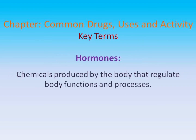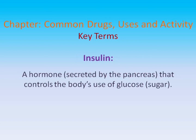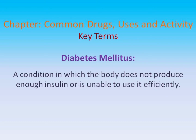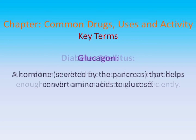Hormones: Chemicals produced by the body that regulate body functions and processes. Insulin: A hormone secreted by the pancreas that controls the body's use of glucose or sugar. Diabetes mellitus: A condition in which the body does not produce enough insulin, or is unable to use it efficiently. Glucagon: A hormone secreted by the pancreas that helps convert amino acids to glucose.